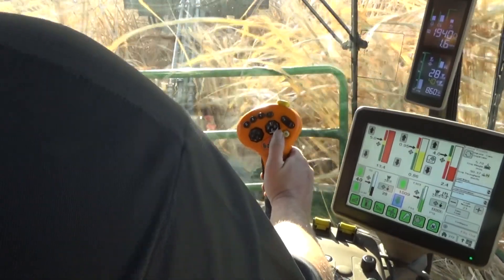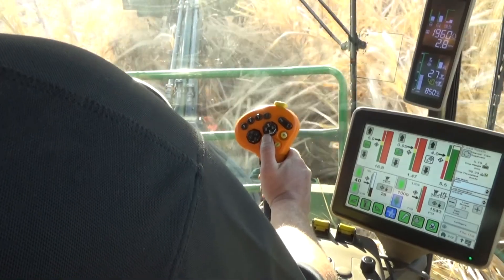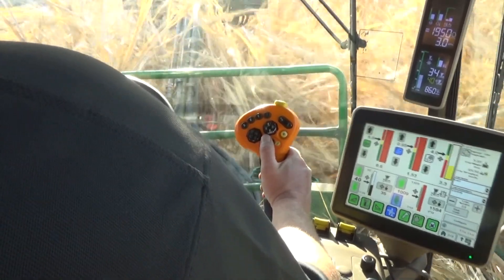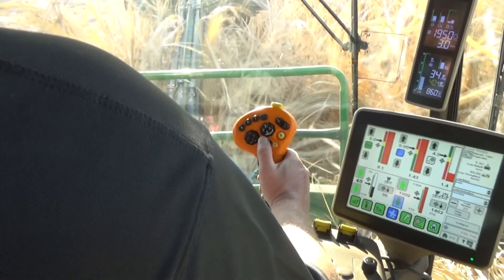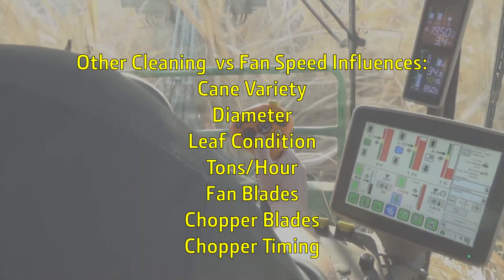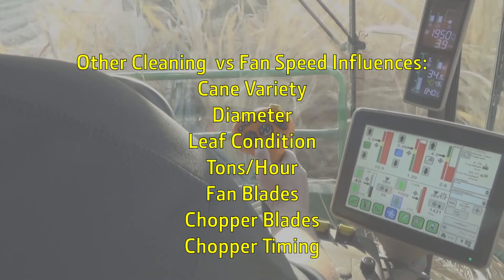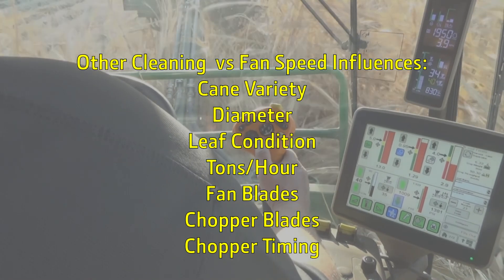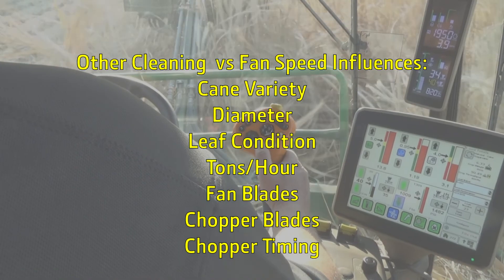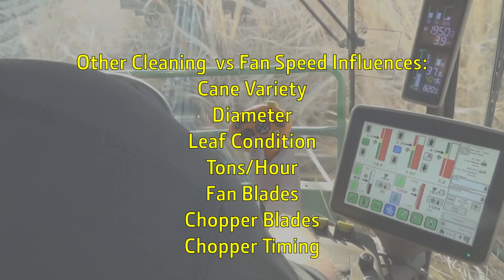If the system does not seem to be able to remove as much trash as previously demonstrated or expected, this indicates other factors should be considered. Some known influencers of cleaning performance versus fan speed are cane variety, diameter, leaf condition, throughput such as tons per hour, fan blades, chopper blades, and chopper timing, which should be investigated.